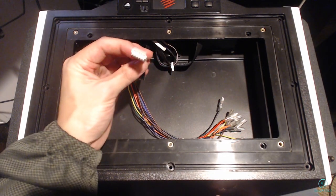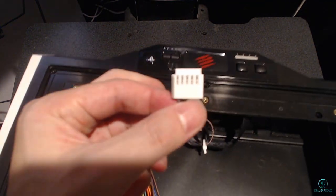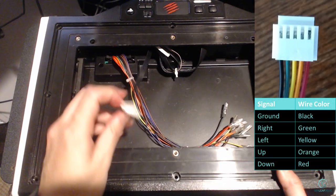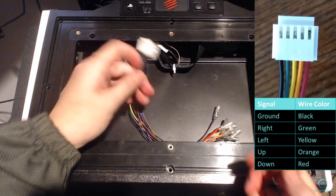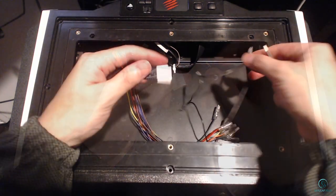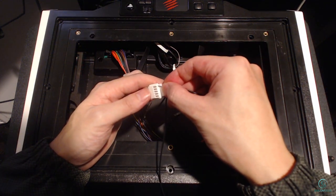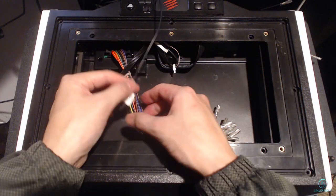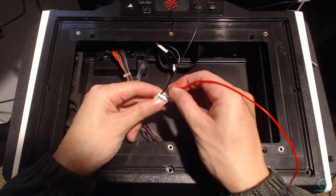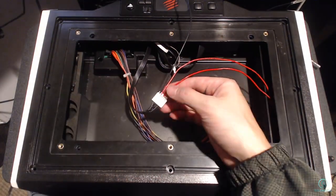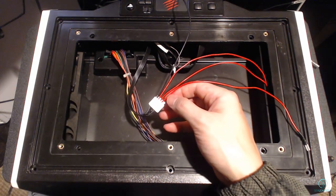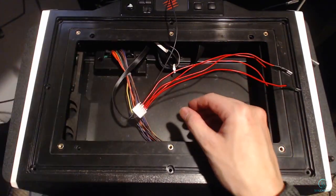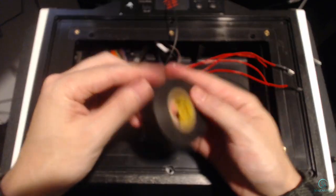Once we are done making the wires, it is time to insert them into the connector. With the connector tab on the bottom, the pins from left to right are ground, right, left, up, and down. Once that is done, secure the wires with electrical tape.